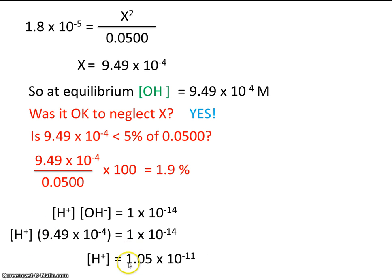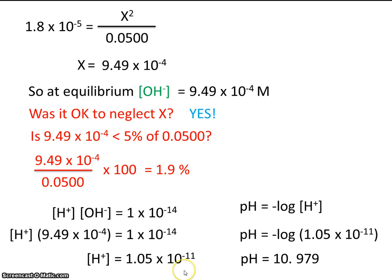So let's take the negative log of the hydrogen ion concentration. And we get a final answer of 10.979.